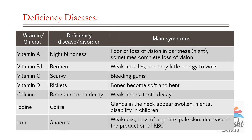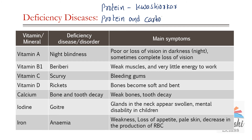A person may be getting enough food to eat, but sometimes the food may not contain a particular nutrient. If this continues over a long period of time, the person may suffer from its deficiency. Deficiency of protein causes kwashiorkor. Symptoms are stunted growth, thinning of legs, and protruding belly. Sometimes both protein and carbohydrate deficiency will occur — if a child does not get these two nutrients, it leads to a condition called marasmus.